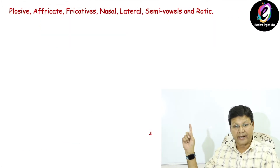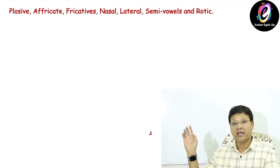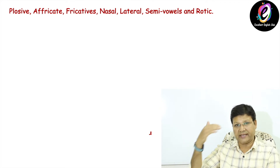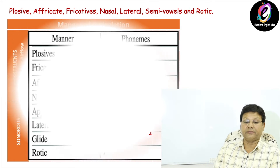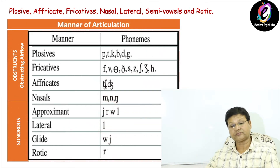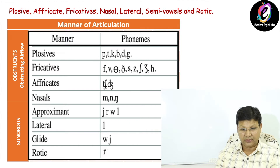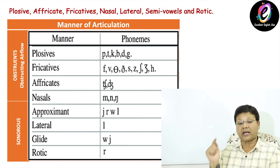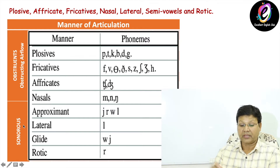The seven groups are: plosive, affricate, fricatives, nasal, lateral, semivowels, and rhotic. I'll show you a chart so you can understand how they are divided. In the chart you will see that number one, plosives: pa, ta, ka, ba, da, ga — six sounds.